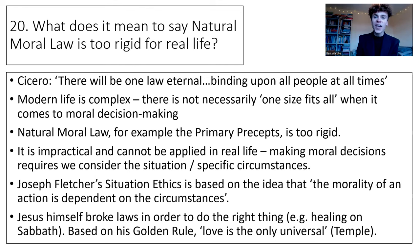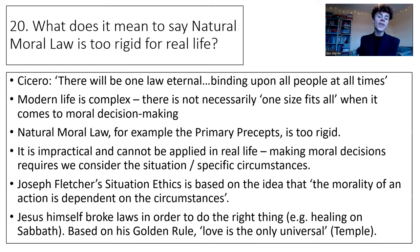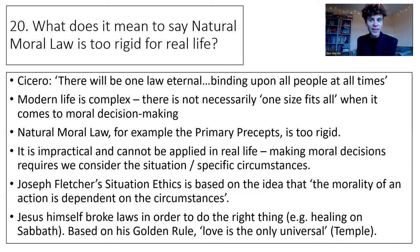Joseph Fletcher said there is one thing and that one thing is love — so is it that there should be five primary precepts or should there just be one ruling principle? In situation ethics, which we also study for the course, Fletcher believed there was only one thing and that one thing is love. You can use different ethical theories to critique each other — it will impress the examiner and show off your knowledge of the wider course. Fletcher's situation ethics is based on the idea that there is only one ruling principle: love. We see this in the writing of William Temple, a former Archbishop of Canterbury, a 20th century Christian scholar who said that love is the only universal, because as Fletcher put it, the morality of an action is dependent on the circumstances.